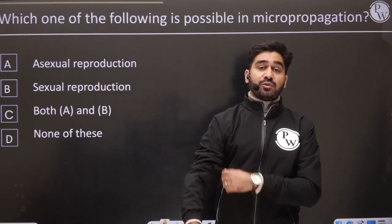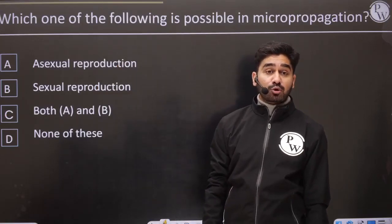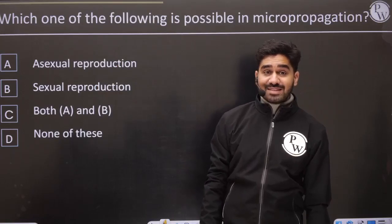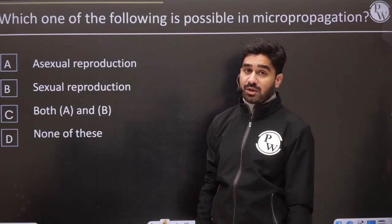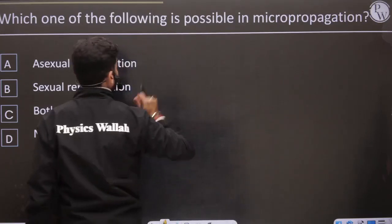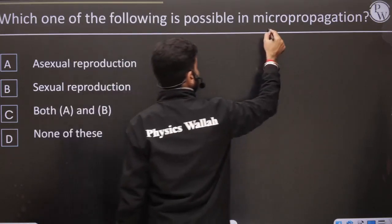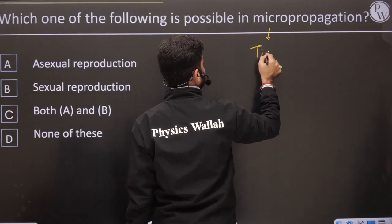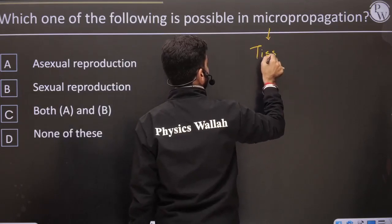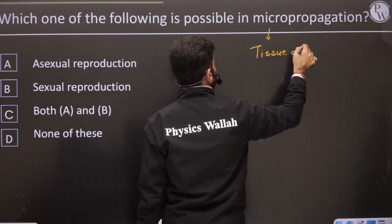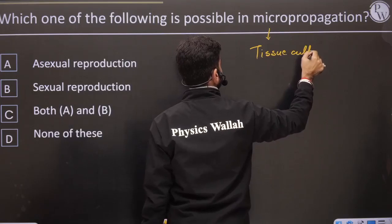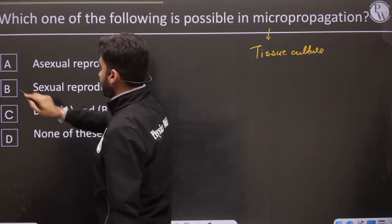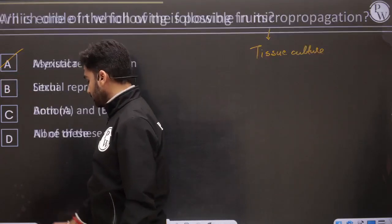Which of the following is possible in micro-propagation? Options: asexual, sexual, none, both. We clearly said that micro-propagation uses the technique of tissue culture. And we said this complete process is asexual.